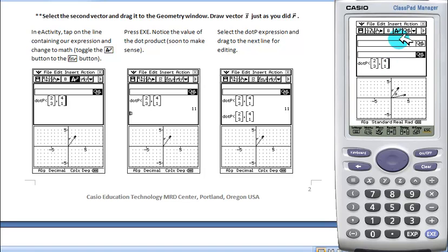Now up in the eActivity, we're going to change this line from a text line to a math line with this button. And if we hit eXe, we'll evaluate that line and see that the dot product of those two vectors is 11.